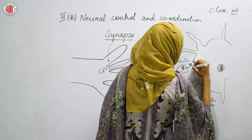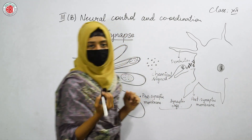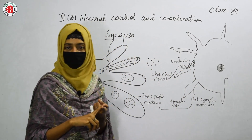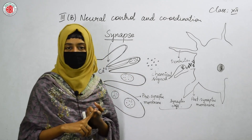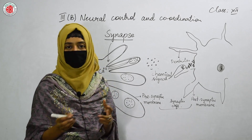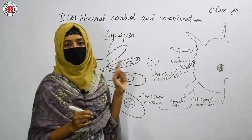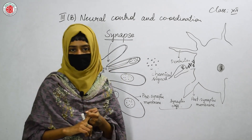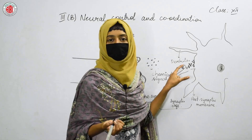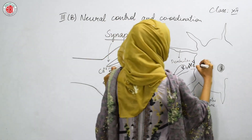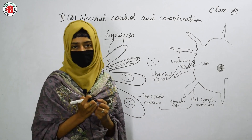We have already discussed in the last class about the types of channels. One is the mechanically gated channel that opens due to external pressure; another is the voltage-gated channel that opens due to changes in voltage; and the next one is the ligand-gated channel. This ligand-gated channel opens when the receptors receive the chemicals.